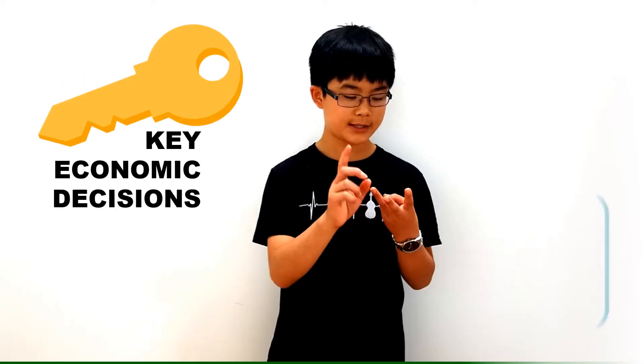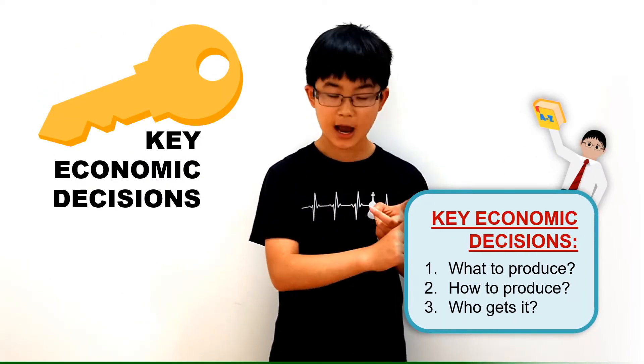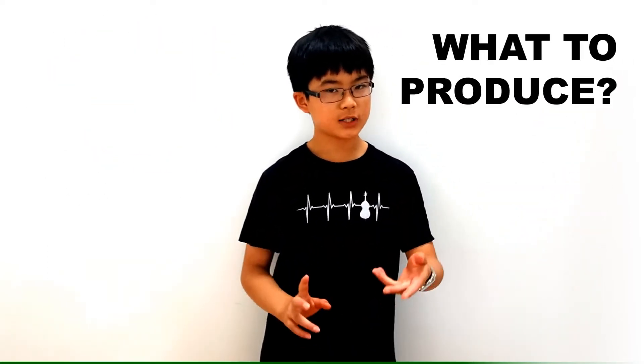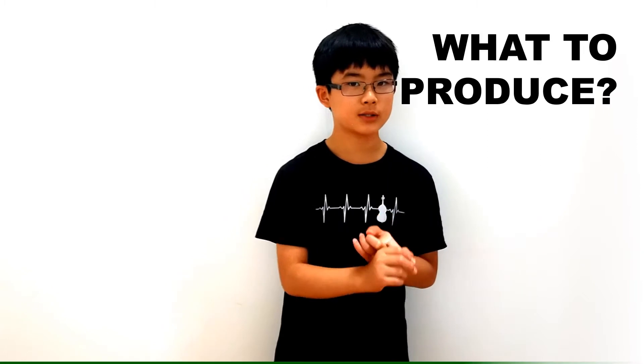Okay, the third thing in this category is the key economic decisions. There's three of them: what to produce, how to produce it, and who gets it. Pretty simple, right? Okay, so the first one, what to produce. This is pretty simple.